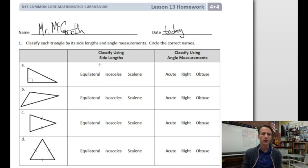Our instructions in number one are to classify each triangle by its side lengths and angle measurements. Just circle the correct names. We can do this. When we look at triangle A, you see this little square in the corner - that means that's a right angle. So let's go for that first.